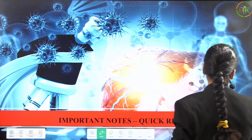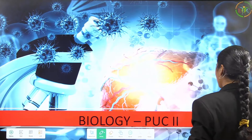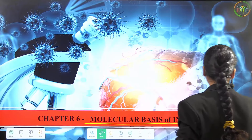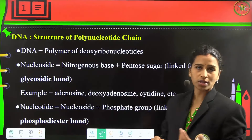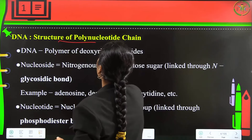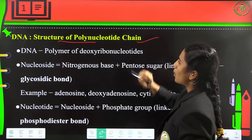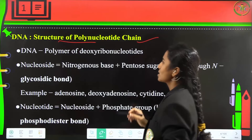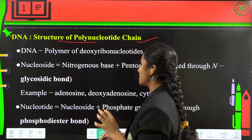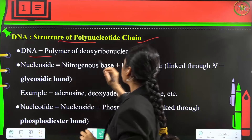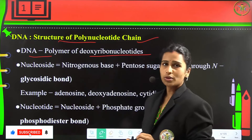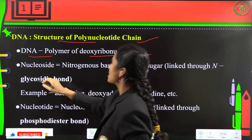Molecular basis of inheritance — important points. Firstly, DNA. It is the structure of a polynucleotide chain. DNA is a structure which is built with polynucleotides, and it is made up of deoxyribonucleic acid nucleotides.